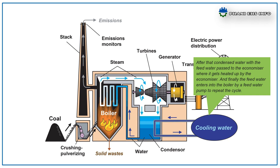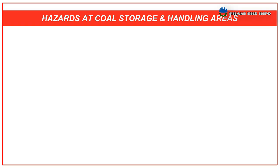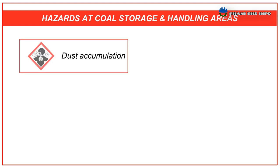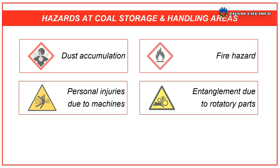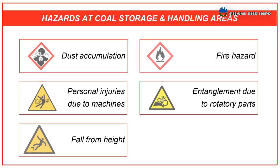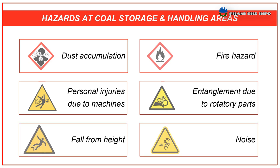Next, we can see what are the safety controls at a power plant. The main hazards at coal storage and handling areas are: dust accumulation, fire hazards, personal injuries due to machinery, entanglement due to rotary parts, fall from height, and noise.